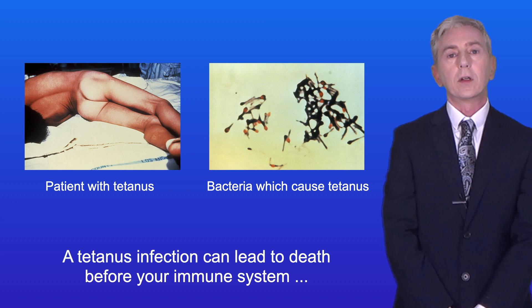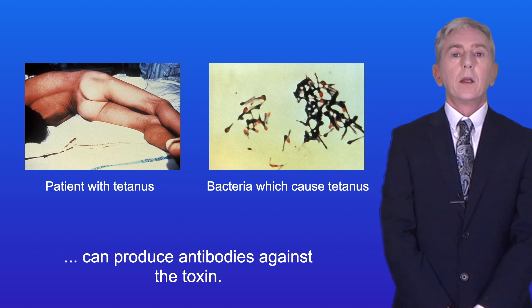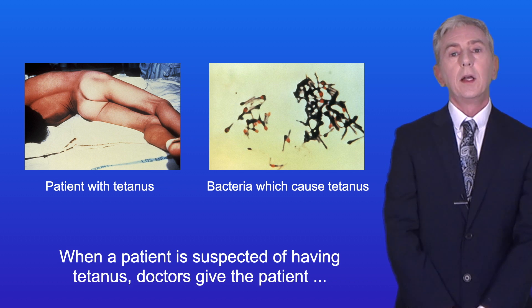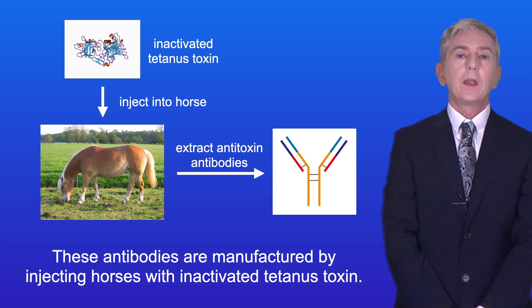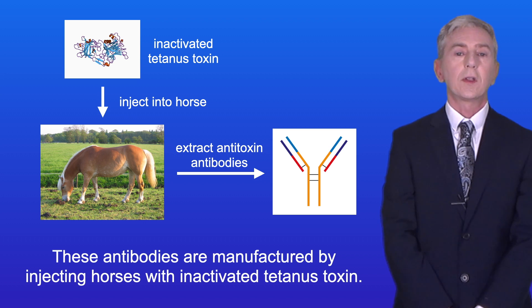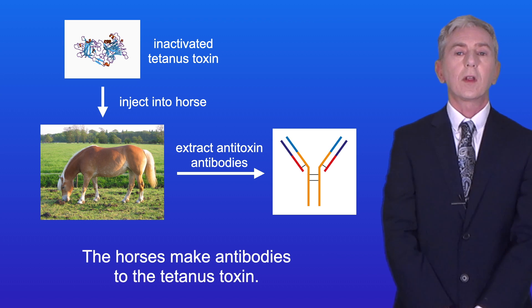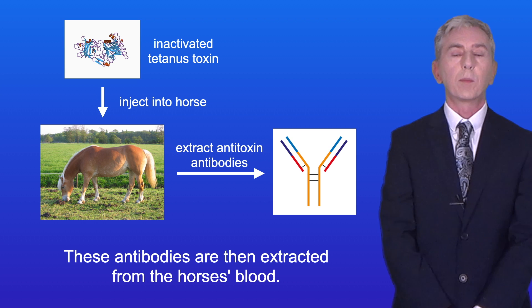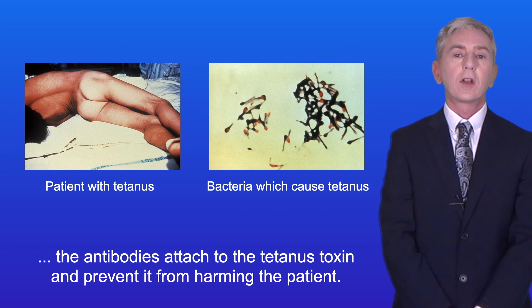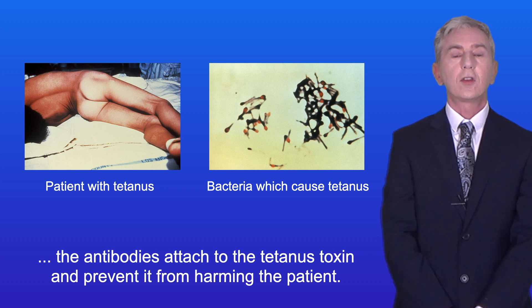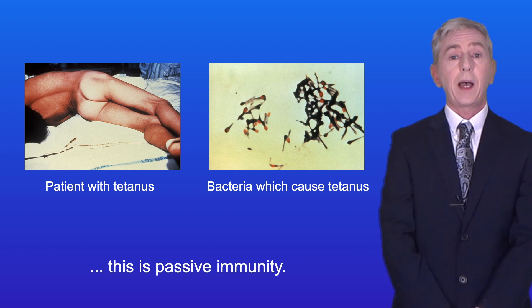A tetanus infection can lead to death before your immune system can produce antibodies against the toxin. So when a patient is suspected of having tetanus, doctors give the patient an injection of antibodies against the tetanus toxin. These antibodies are manufactured by injecting horses with inactivated tetanus toxin. The horses make antibodies to the tetanus toxin, which are then extracted from the horse's blood. When injected into a patient, the antibodies attach to the tetanus toxin and prevent it from harming the patient. Because these antibodies were not produced by the patient's immune system, this is passive immunity.